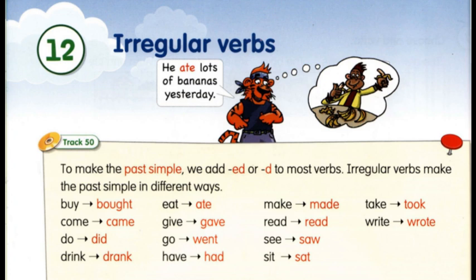Зверніть увагу, що у слові read – read написання однакове. Зміняється лише вимова. Read – read. У теперішньому часі вимовляємо read, у минулому часі – read. See – бачити, saw – бачив. Sit – сидіти, sat – сидів. Take – брати, взяти, took – брав, взяв. Write – писати, wrote – писав.